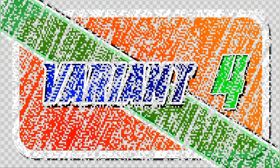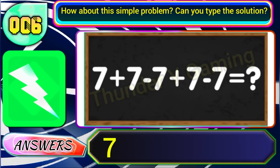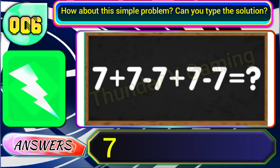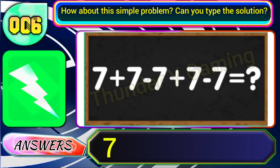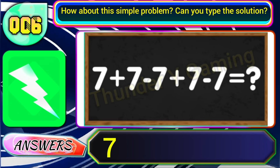Alright, now in variant 4, if you get the equation 7 plus 7 minus 7 plus 7 minus 7, then the answer will be 7.